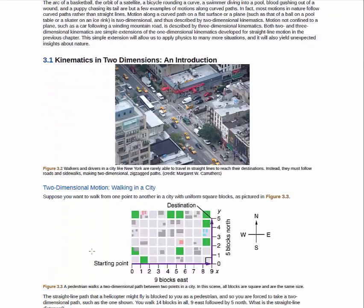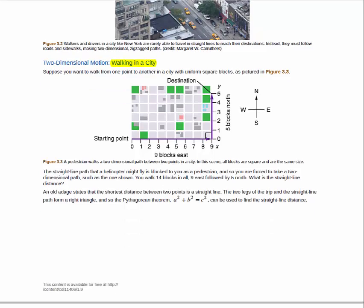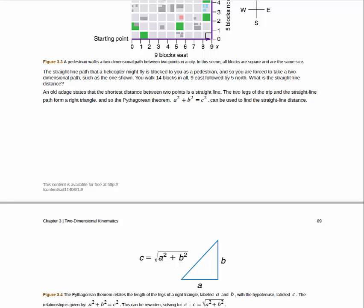Moving on, we're going to get started with Section 3.1, which is introducing the idea of kinematics in two dimensions. As discussed in the Chapter 2 reading, kinematics is the study of motion. We're not to why things move yet, we're just trying to describe the motion of objects mathematically. Here you have a nice example of someone walking in a city of grid streets, and how to use the Pythagorean theorem to figure out the total distance traveled.